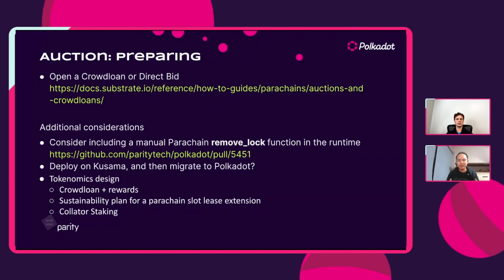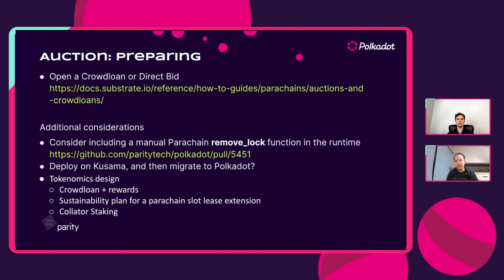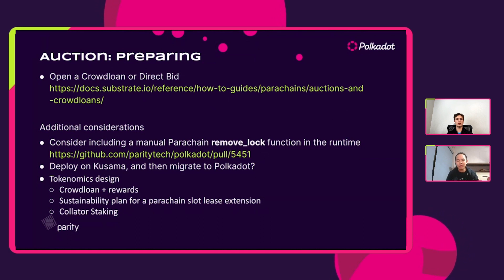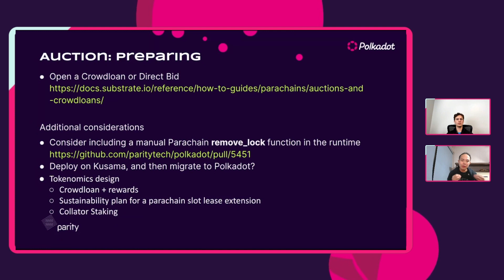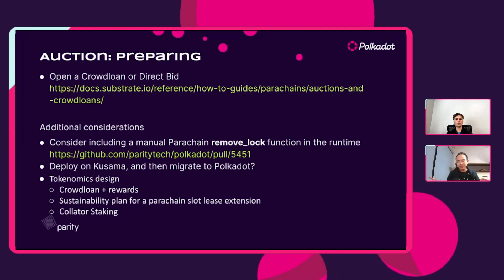Regarding tokenomics specific and unique to Polkadot: with crowdloans, you have to think about what types of incentives are in place to allow community contribution. Apart from that, if you're doing a crowdloan to win the current slot, you must also think about your sustainability plan for future slots — what we call slot lease extensions. If you're doing one crowdloan right now, what about the second crowdloan for your slot lease extension in the future? That means potentially continuing to allocate a certain token distribution over multiple slot lease extensions, and ensuring that is a real plan within your overall tokenomics design.